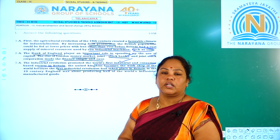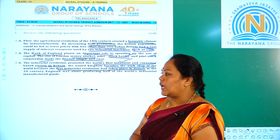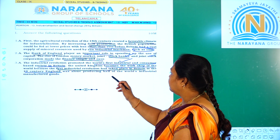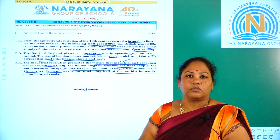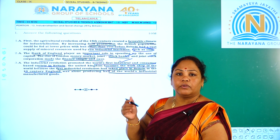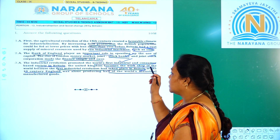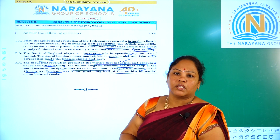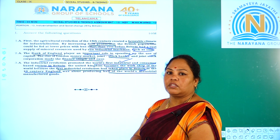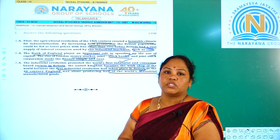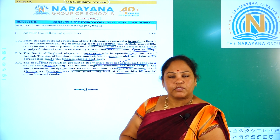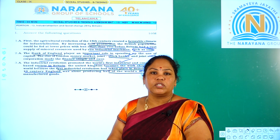Britain became the workshop of the world because the first industrial revolution took place during the 19th century, and Britain alone was producing half of the world's industrially manufactured goods. These are the topics we have discussed today regarding industrialization, the industrial revolution, and how Britain became the workshop of the world. This is all about today's assignment, children. Thank you all.